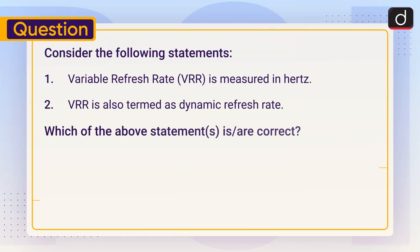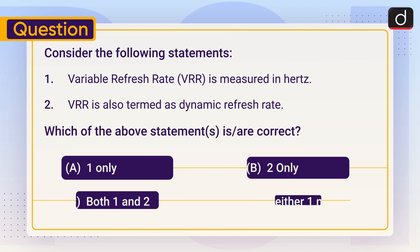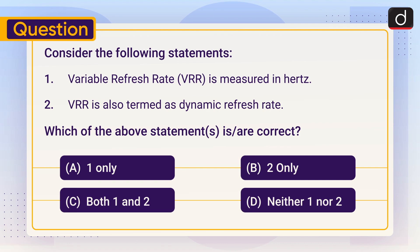Now it's time for the practice question. Consider the following statements. 1. Variable Refresh Rate or VRR is measured in Hertz. 2. VRR is also termed as dynamic refresh rate. Which of the above statement or statements is or are correct? 1 only, 2 only, both 1 and 2, or neither 1 nor 2. Send the answer to this question in the comment section.